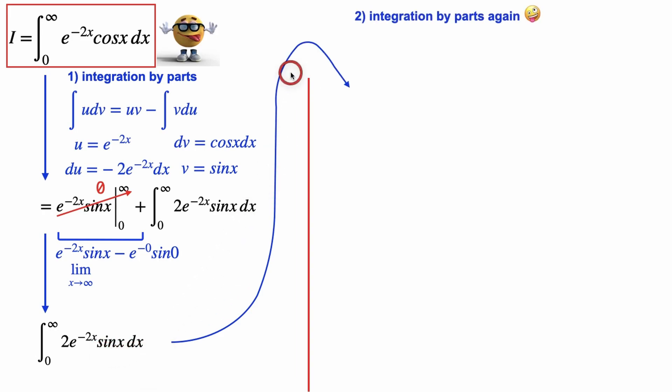We're going to do integration by parts again, and we're going to set u equal to 2 times e to the negative 2x, dv equal to sin x dx. We'll take the derivative du equals negative 4e to the negative 2x, and then v equals negative cos x, and we'll plug these into our formula for integration by parts to give us this right here. This is u times v minus the integral of v du.